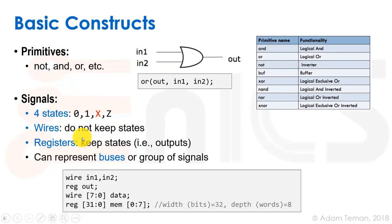Wires are these types of nets. Verilog has a differentiation between wires and registers. In SystemVerilog they've fixed this concept, but in general we have wires and regs. Wires do not keep state and registers do keep state — we'll explain the fine details later.